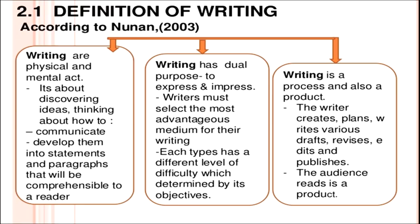According to Newnan in 2003, writing is a physical and mental act. It is about discovering ideas, thinking about how to communicate, and developing them into statements and paragraphs that will be comprehensible to a reader. Writing has basically dual purposes: to express and to impress. Writers must select the most advantageous medium for their writing. Each type has a different level of difficulty determined by its objective.